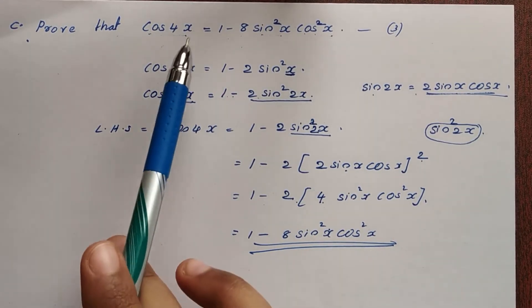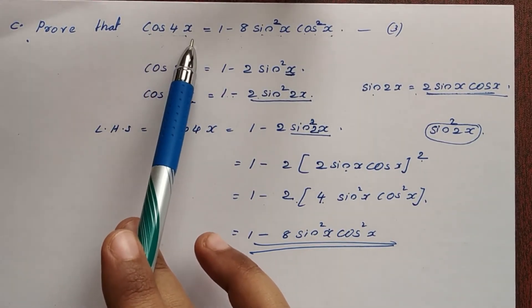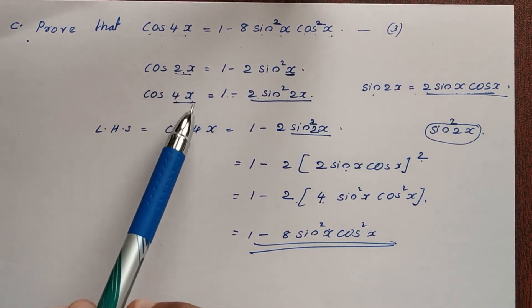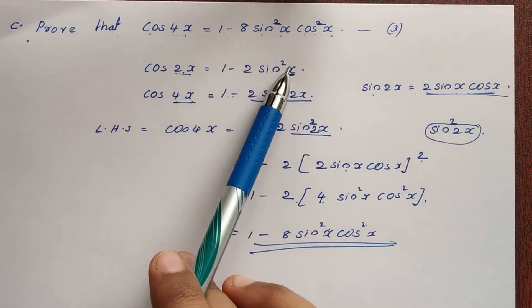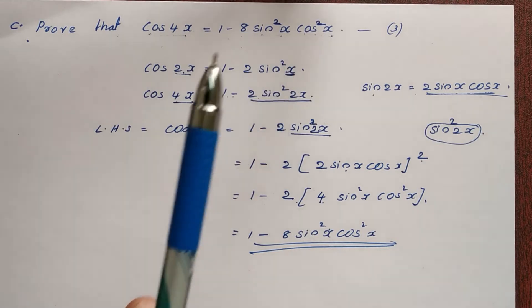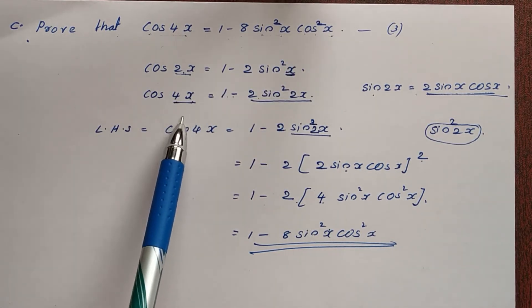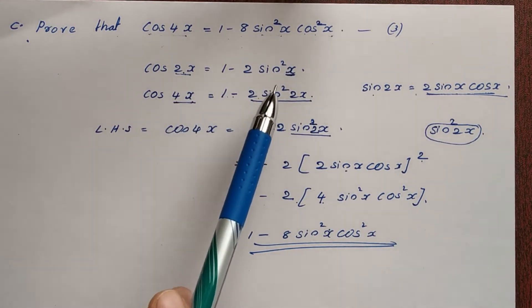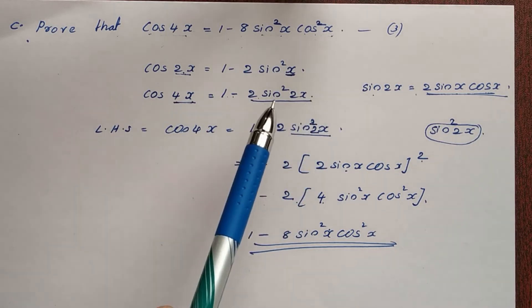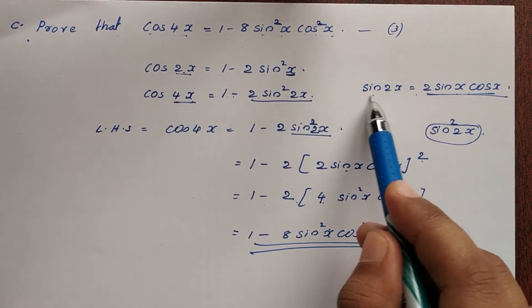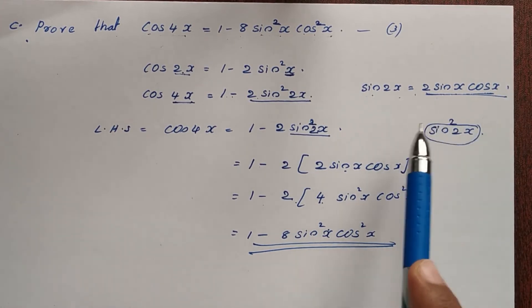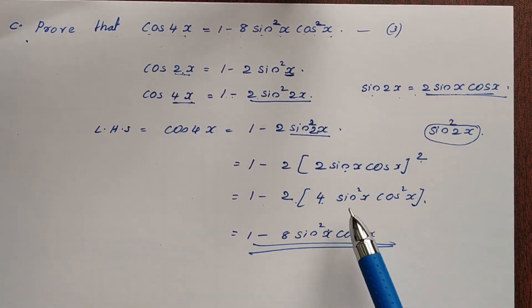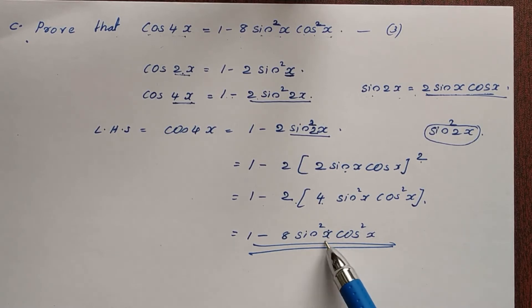To summarize: we have cos 4x. We get the result of cos 2x as 1 minus 2 sin²x. Then for cos 4x we get 1 minus 2 sin² 2x. Then sin 2x equals 2 sin x cos x. We use that to get the final result of 1 minus 8 sin²x cos²x.